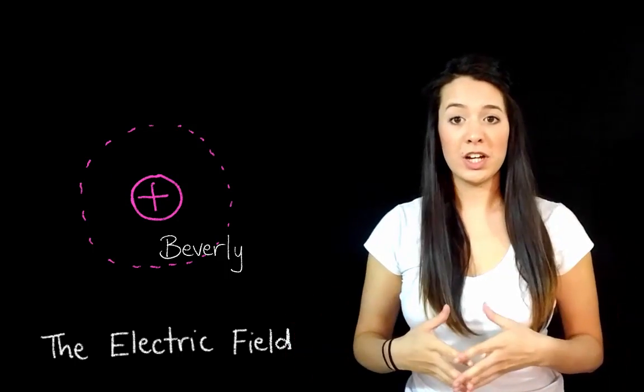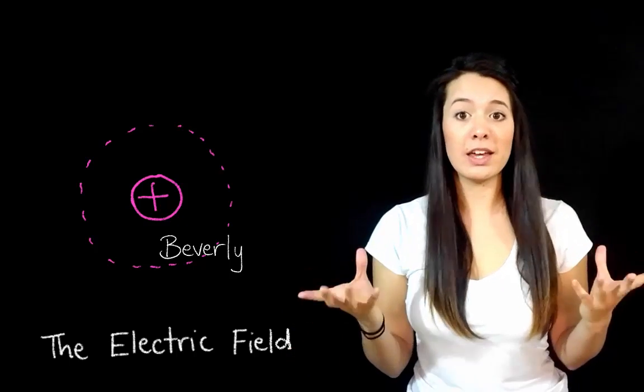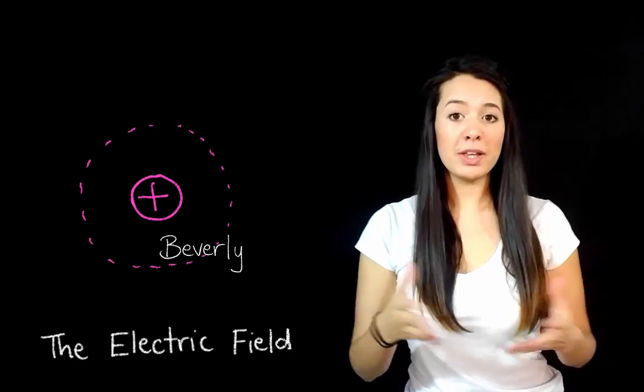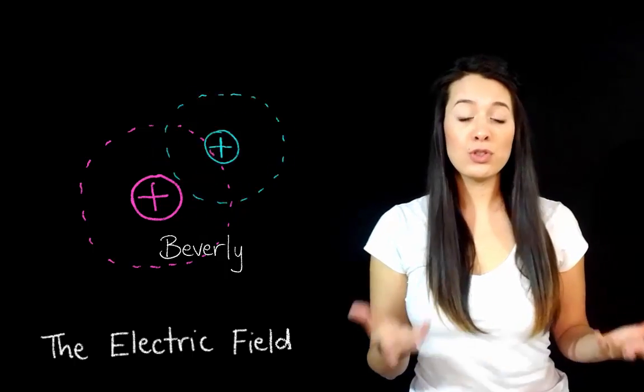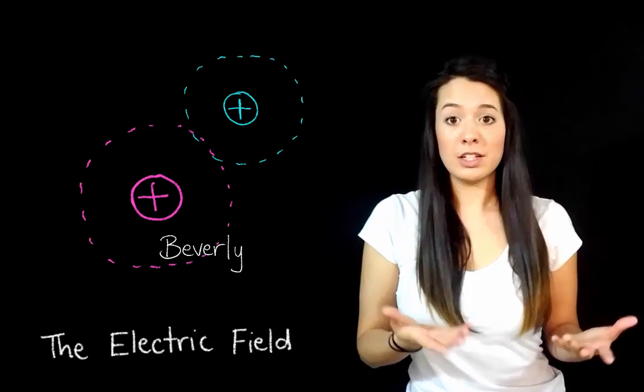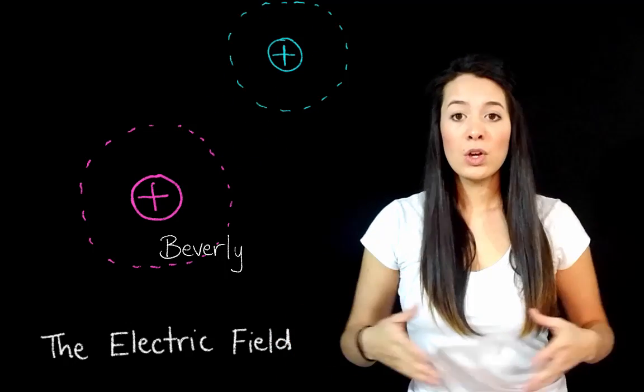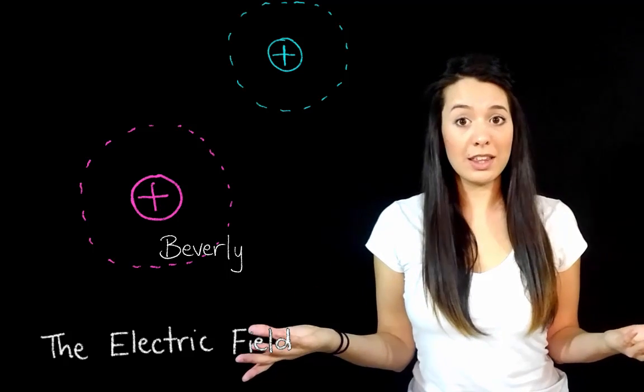But the electric field of a charge does not have uniform strength. It doesn't have the same strength everywhere. Say if we placed Ethel here, quite close to Beverly, she would experience a stronger repelling force than if we placed her here, relatively far from Beverly. So how can we accurately represent this varying change in strength?